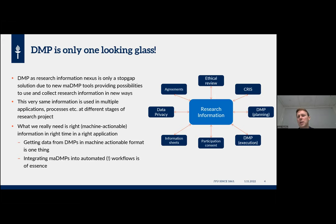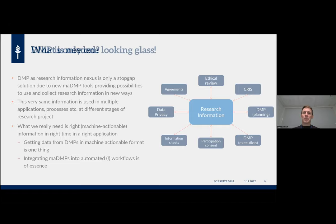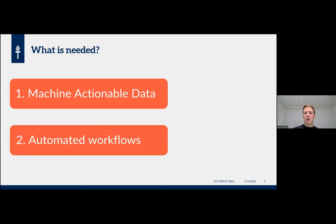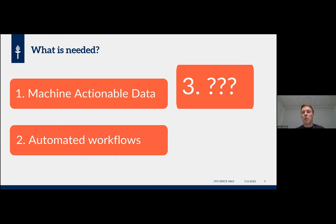Getting data from a DMP in machine-actionable format is quite easy once we make the data models and structure the questions. But the other question is what to do with that information — just as Jari said, that is a totally different project. To really get the extra benefit from machine-actionable DMPs, we need to integrate that information into automated workflows as much as possible. So in short: we should have machine-actionable data, we should have automated workflows, then we have something to tie them together, and in the end we have a real benefit.